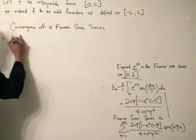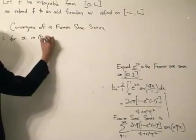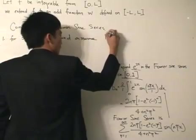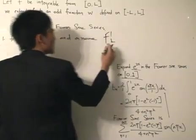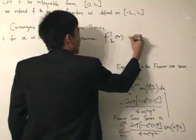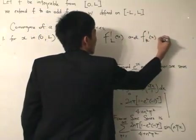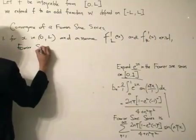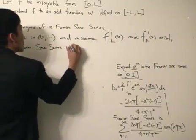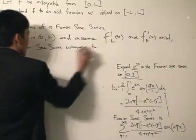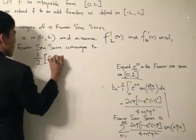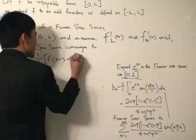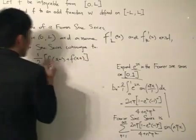Now, next up is the convergence. For x in (0,L), and assume the left-hand derivative and the right-hand derivative exist, Fourier sine series converges to the same thing: half of the limit as we approach x from the negative side plus the limit from the positive side, and you divide that by 2.